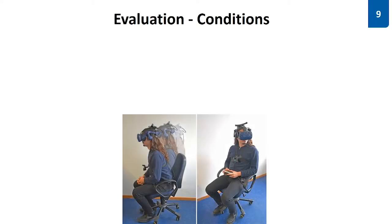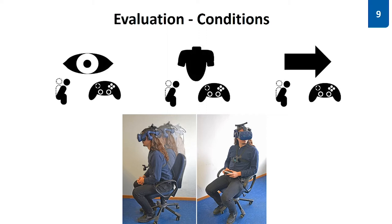But additionally, we also expected that the motor component of the travel technique also has an impact on the question if the ability of looking around is beneficial or not. We especially expected a difference between already embodied interfaces, here leaning, and joystick or controller-based interfaces. Therefore, we crossed all conditions with this second factor.